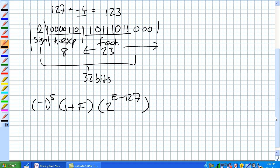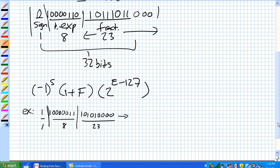Let's go ahead and do an example right here. And there's our example. We've got it parsed out into our 1, 8, and 23. And you can imagine just there's zeros all the way through. So negative 1, in this case, to the sign bit is 1. 1 plus the fractional portion, which is this guy. 1, and remember it's .01010.